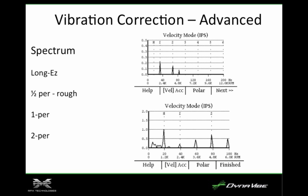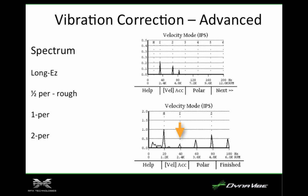Let's look at a couple more of these spectral charts. In the upper graph, you can see that the H — the half-per — is almost nonexistent, and the one is the prop imbalance. If you look at the lower chart, you'll see the prop imbalance is about 0.2 IPS — that's the one, and it's fairly small. But you'll notice that the H, the half-per, is at one IPS.